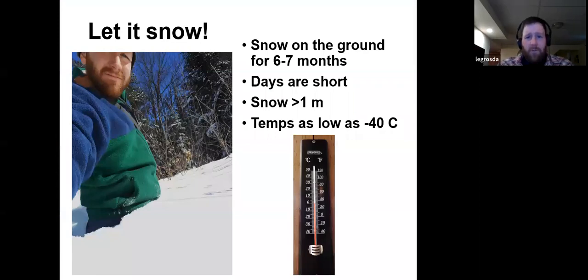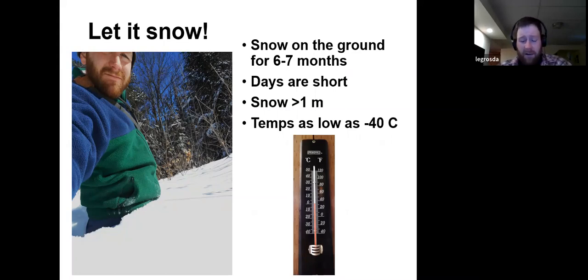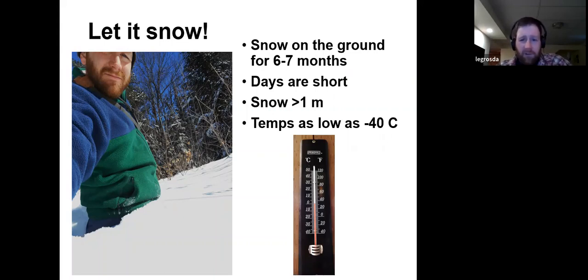It is certainly going to snow. We have snow on the ground for six or seven of the months — not necessarily six or seven continuous months, but on all those calendar months from November till even May, there can be snow on the ground. The days become really short, there can be over a meter of snow. I took this photo of myself in waist-deep snow off a trail a few years back. The temperatures can be cold — we recently had a cold snap of about minus 30, and we've had days in Algonquin Park as low as minus 40 overnight.